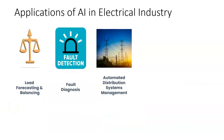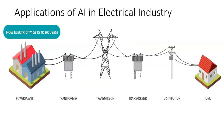The next topic involves fault diagnosis and automated distribution systems management. To understand distribution, let's look at the diagram on screen. There is a power plant which buys or produces electricity from different sources. Then there is a transformer, followed by transmission. The transformer is used again, and then you have the distribution setup before the electricity finally reaches homes. This is the end-to-end view of distribution in the electrical industry.